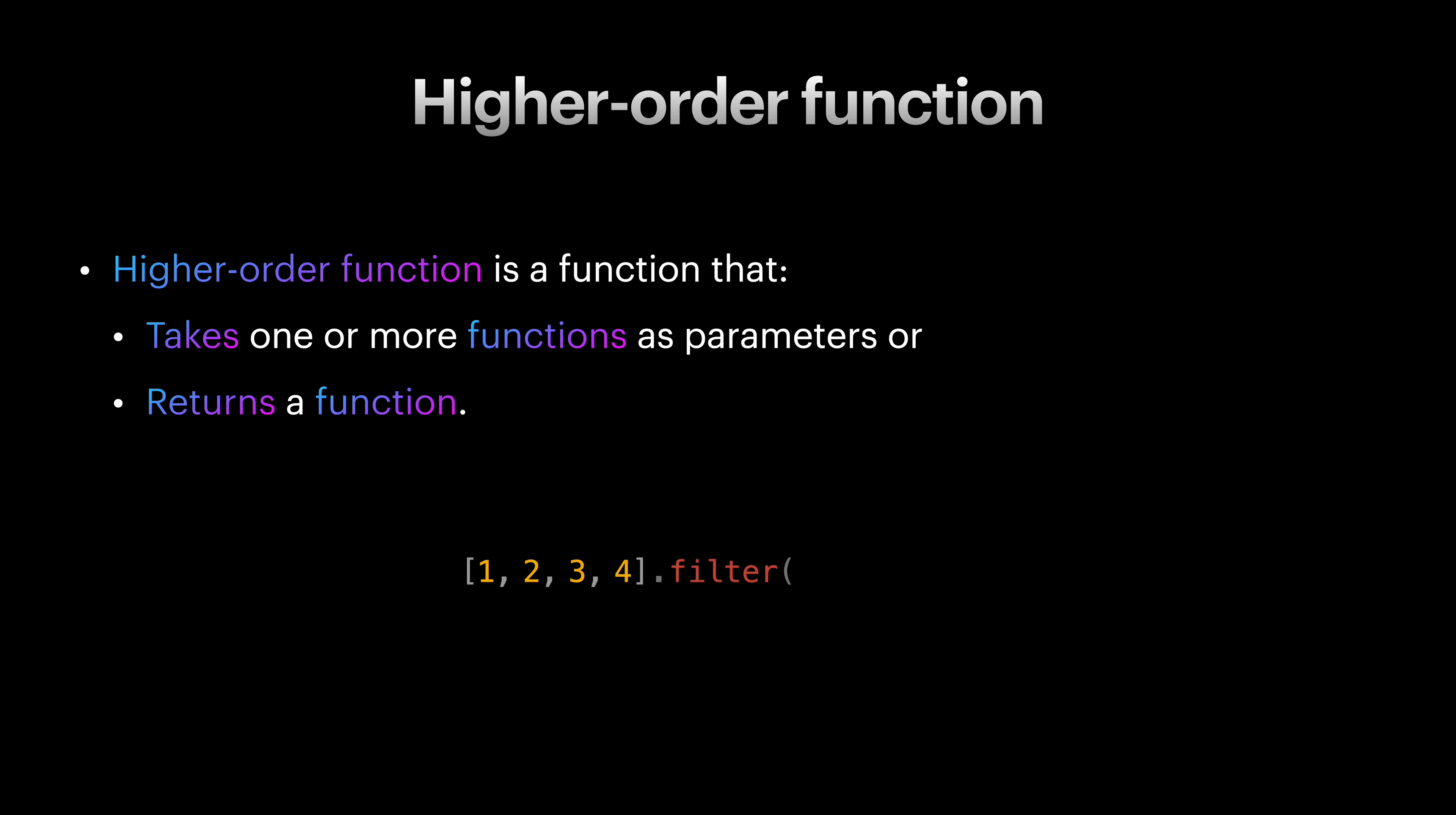Consider an array of numbers in JavaScript. You probably have used filter method on arrays before. Filter receives a function that determines if each item should be included in the resulting array or not. For example, here we are checking if an item is bigger than 2. The output of this is another array which only includes 3 and 4.